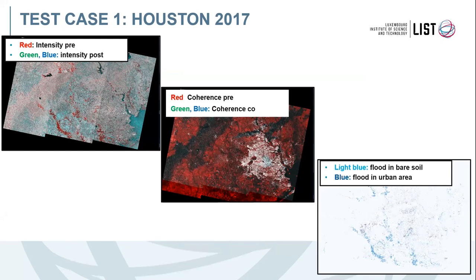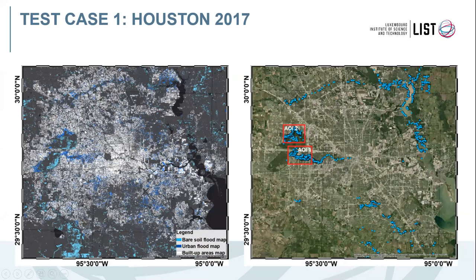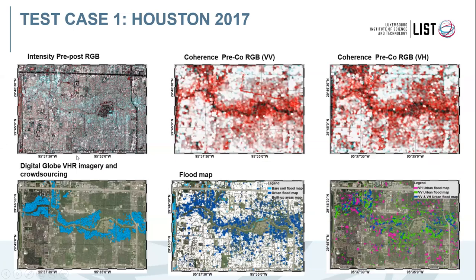Here is the final flood map where in light blue we have flood on bare soil and dark blue in urban areas. Focusing on Houston city, it is possible to see in light blue the flood over bare soil and in dark blue the flood affecting urban areas. We compared this with crowdsourcing data from DigitalGlobe and found that the points detected from the crowdsourcing overlap with our map.